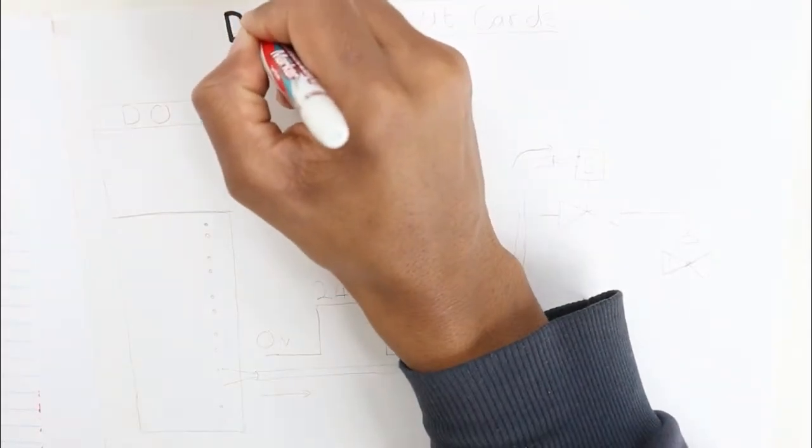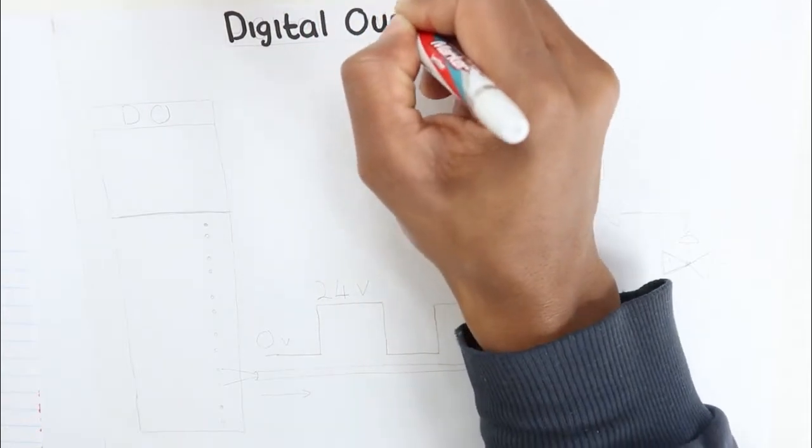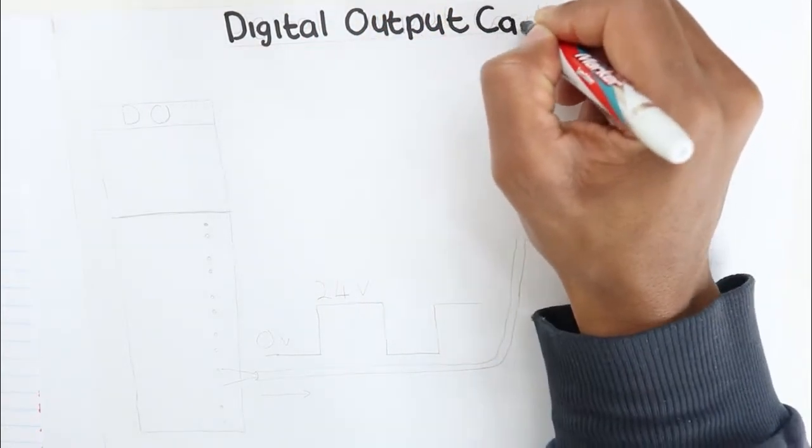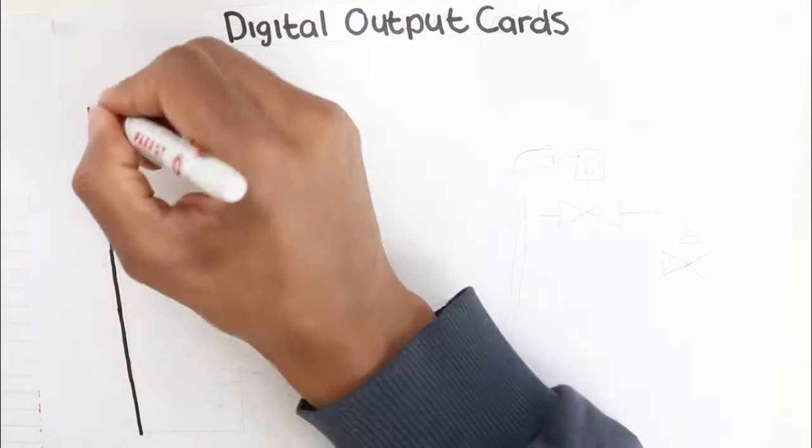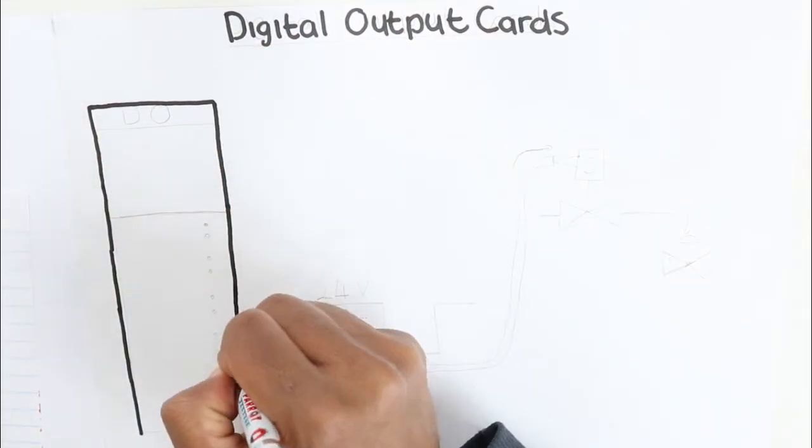The second card that we will look at is the digital output card. This card is used to send digital signals from the PLC to a digital field device.